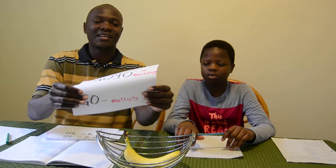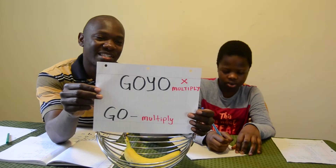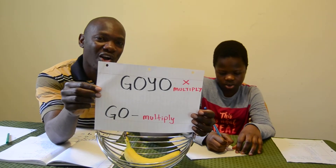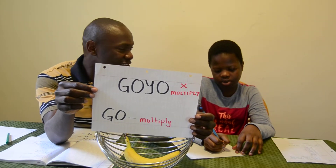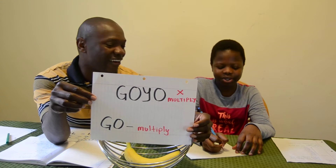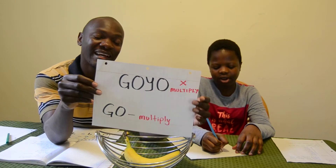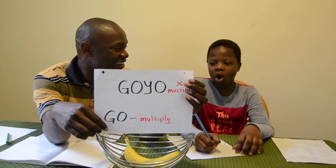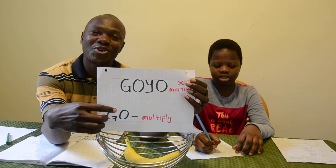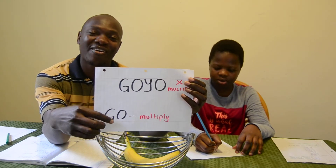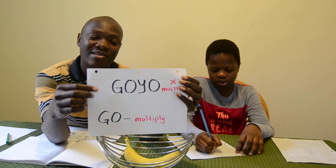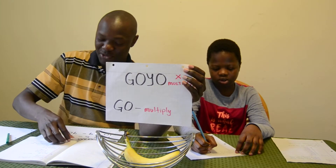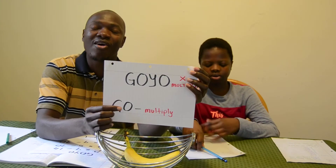Now we move on to multiplication. In multiplication we say 'go.' What do you say? 'Go.' So the action is 'go' — it's not 'go' like English, but 'go.' When I say that you multiply, you actually say 'go.'